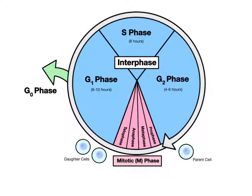Look at the time frame. G1 is eight to ten hours long. The S phase, where DNA is synthesized or replicated, lasts approximately eight hours, and G2 is four to six hours long.